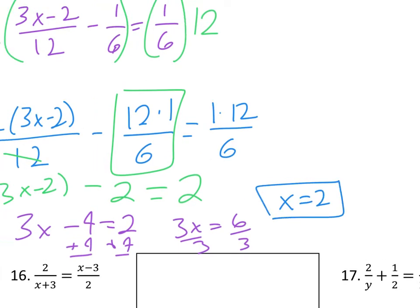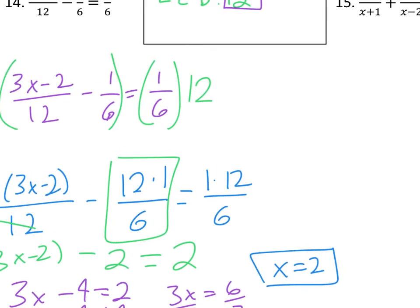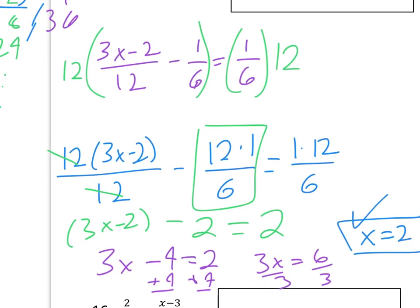Now, we do want to take a look at our LCD. Although our LCD didn't contain any variables, we want to make sure that x equals 2 is not extraneous. So it works out just fine, and so that is our one solution that we have for this equation.